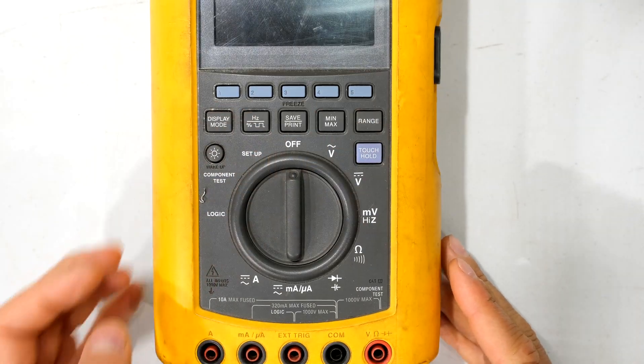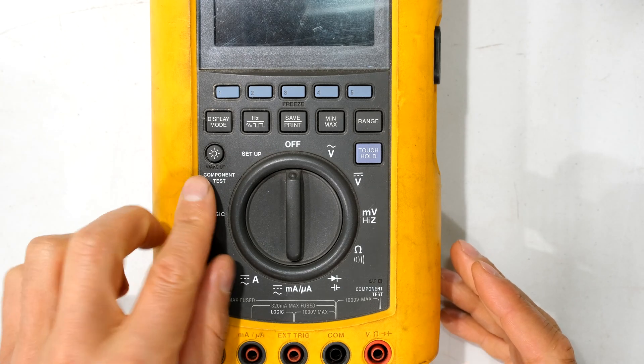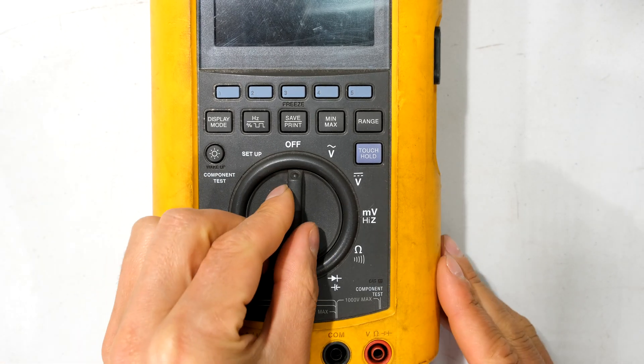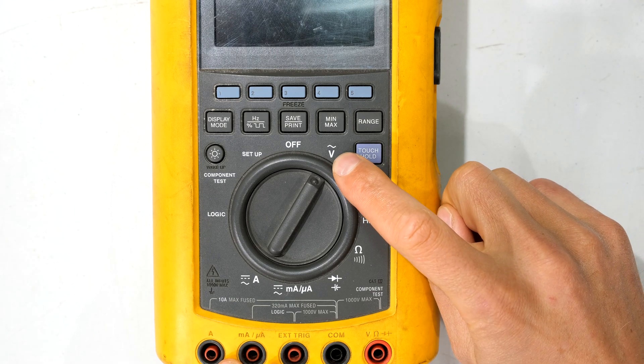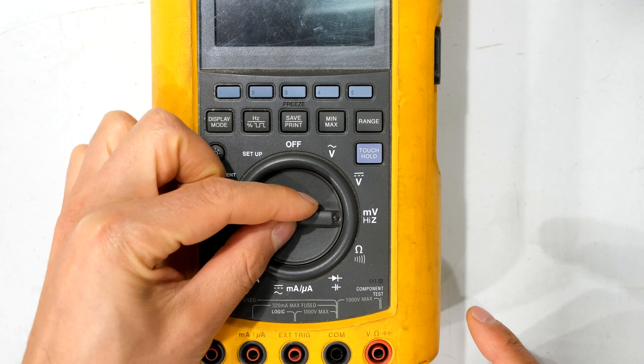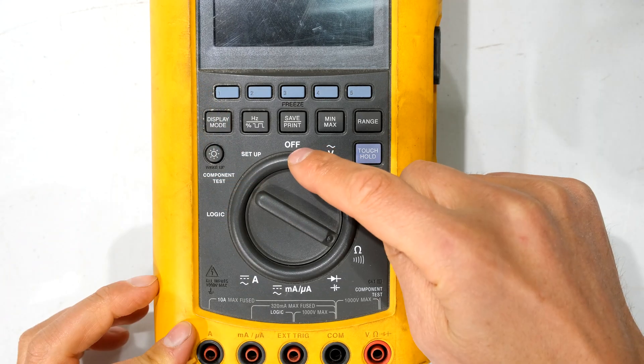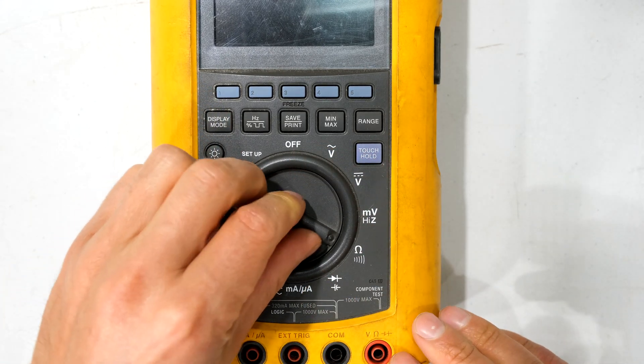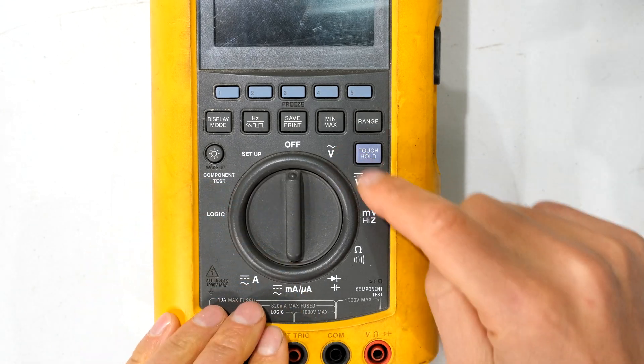Over here I've got a practical example of a rotary switch. This is a multimeter, and notice that if I want to set my multimeter to AC volts, I will rotate the switch to that position. DC volts, millivolts, ohms. So I can select the function by rotating the switch to whichever option I want.